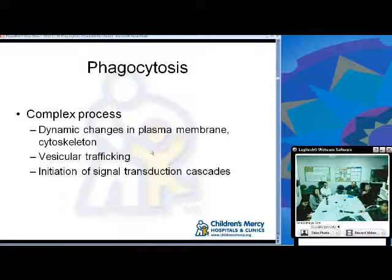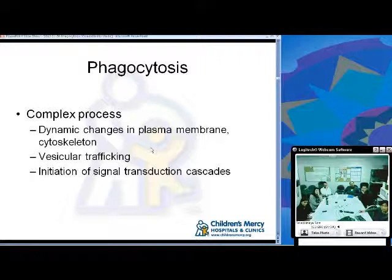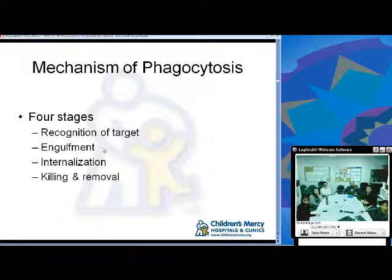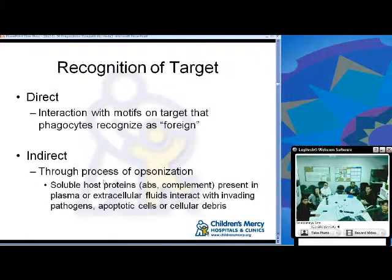Phagocytosis is a complex process. You see dynamic changes in the plasma membrane and cytoskeleton, vesicular trafficking, and initiation of the signal transduction cascade. There are four stages: recognition of the target, followed by engulfment, internalization, and then killing and removal of the organism.